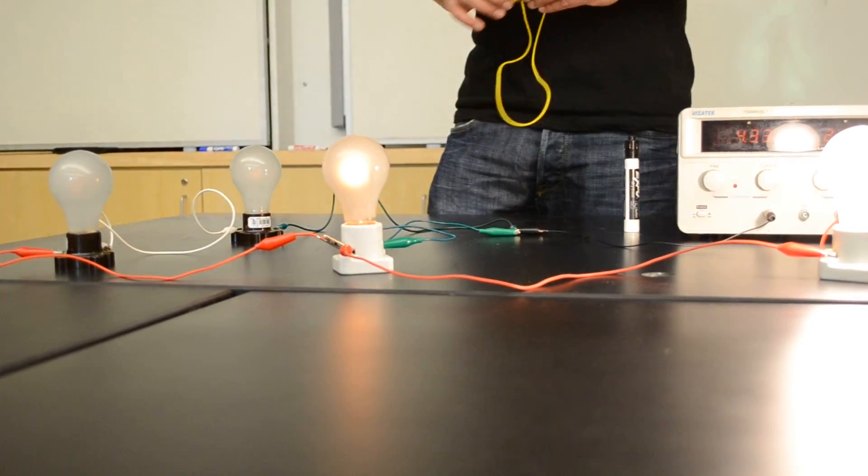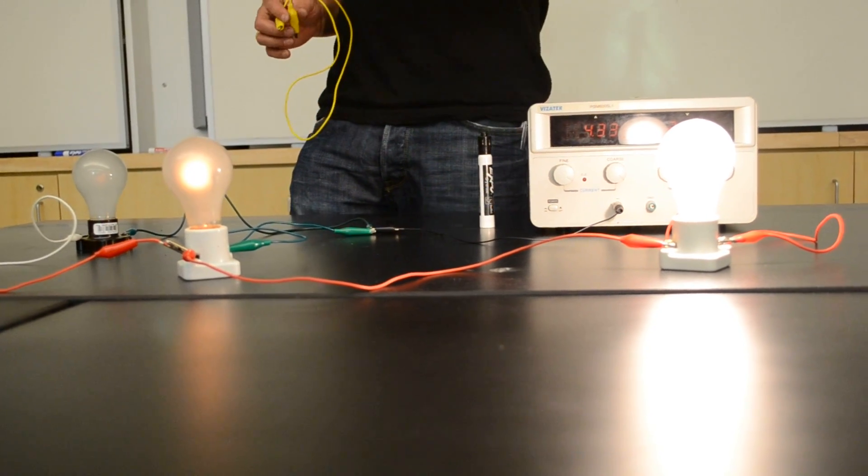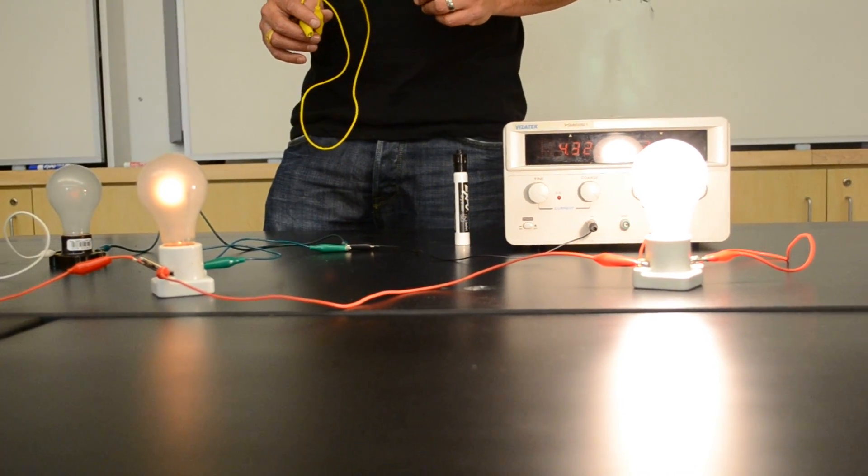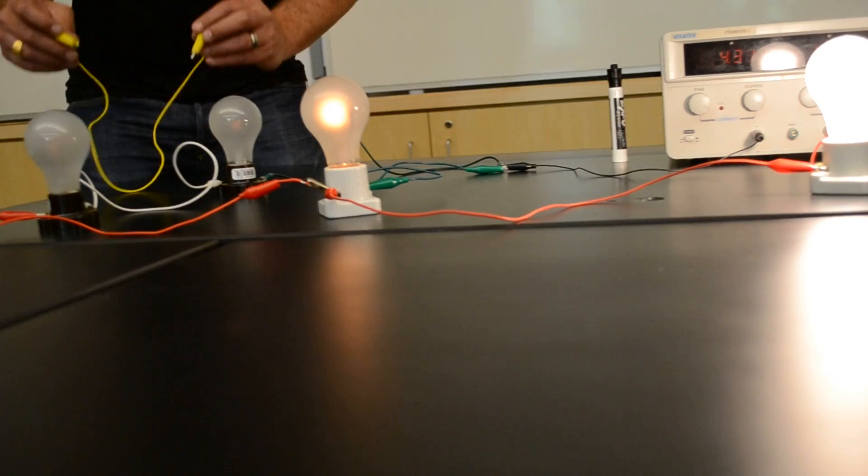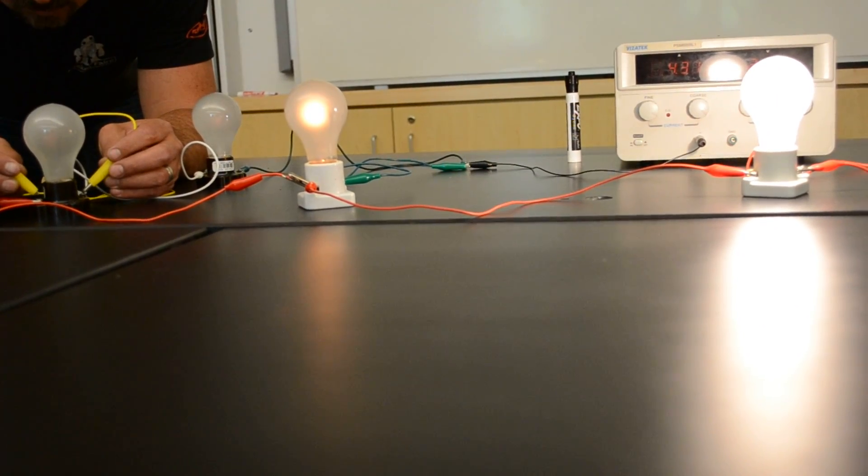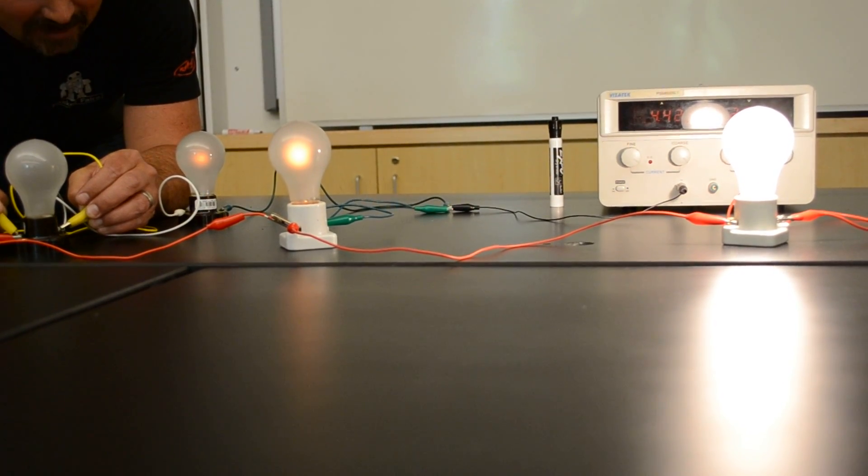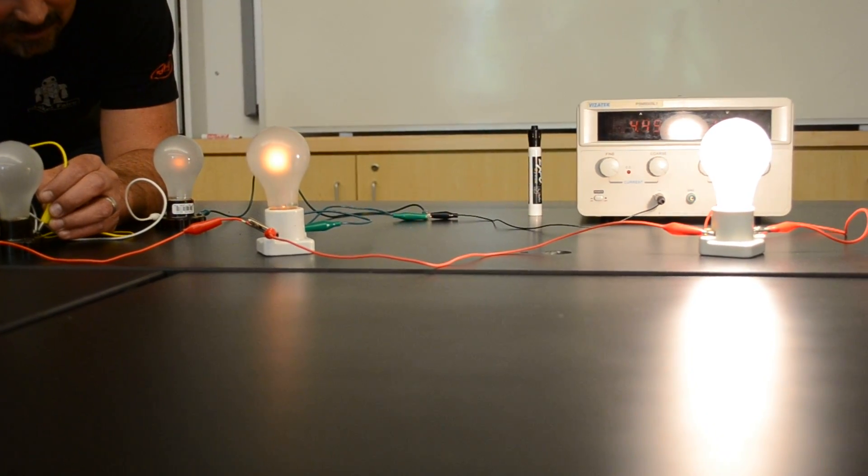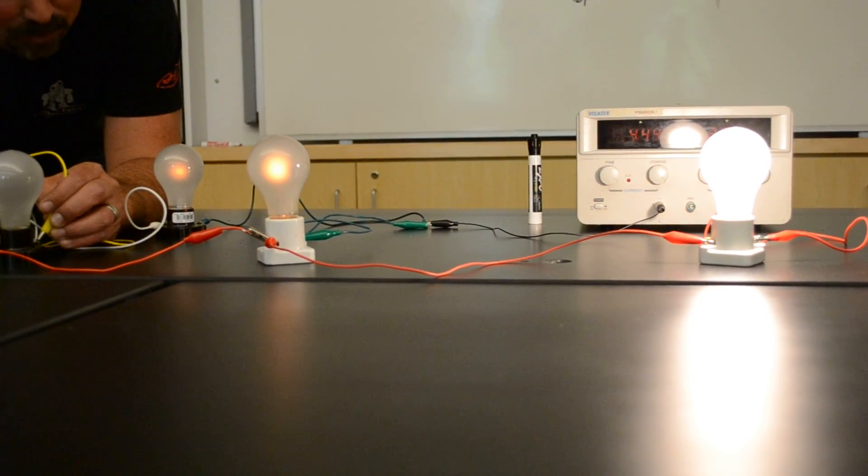And the question is, two parts. Will light bulb A get brighter or dimmer? Will light bulb B get brighter or dimmer? What do you think, Nicole? I think they should both get brighter. Both get brighter. Let's see what happens. So on the count of three, I will short circuit light bulb C. One, two, three. And hopefully you saw the effect. Let me take it off. And now watch. You can see that light bulb B got dimmer and light bulb A got brighter.